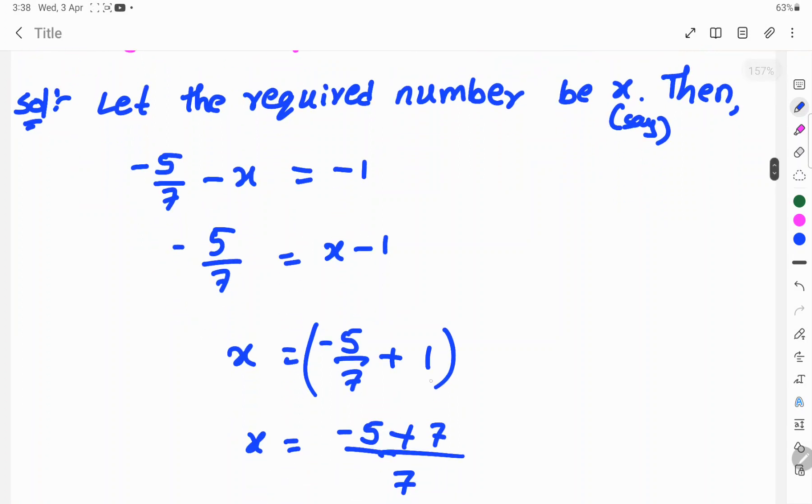x equals, LCM is 7. 7 cancels in one time. 1 into minus 5 is minus 5, plus 7 into 1 is 7.